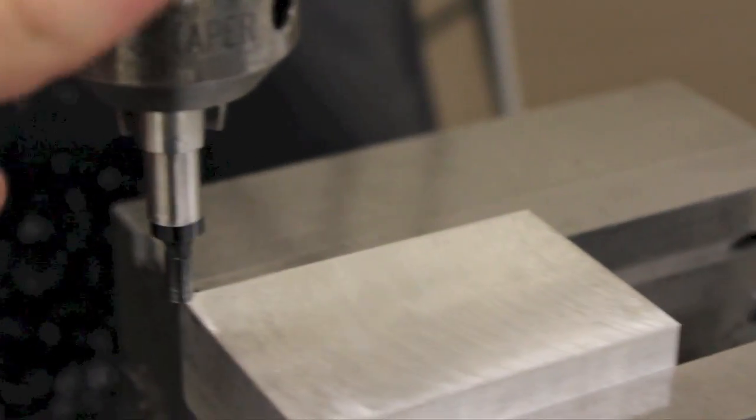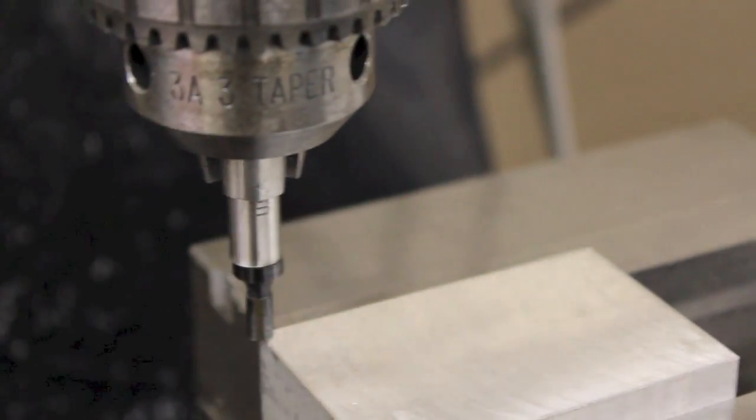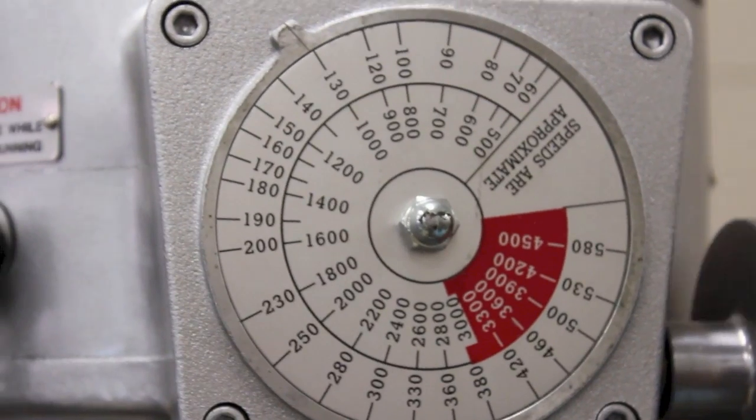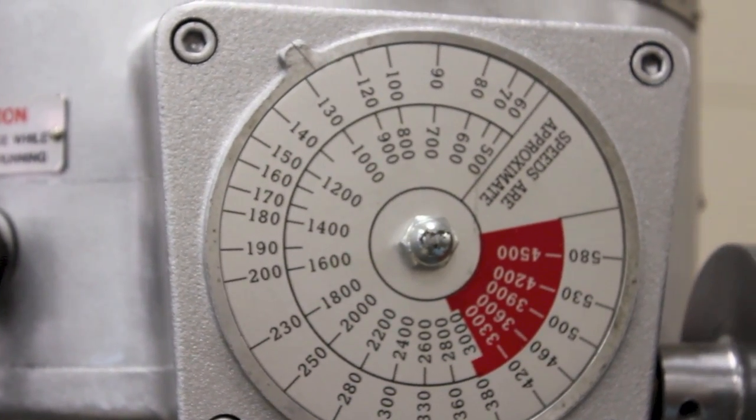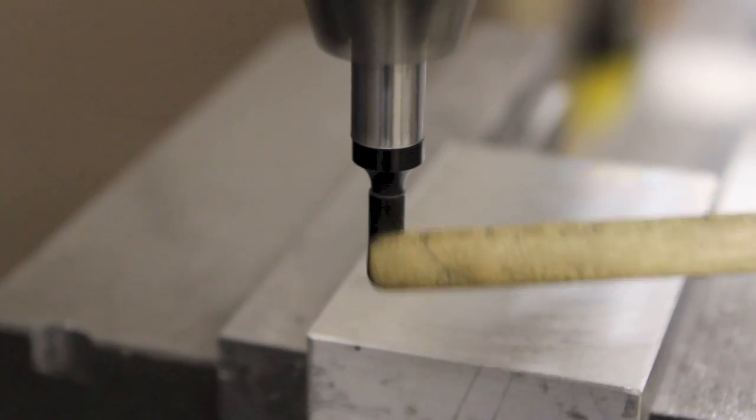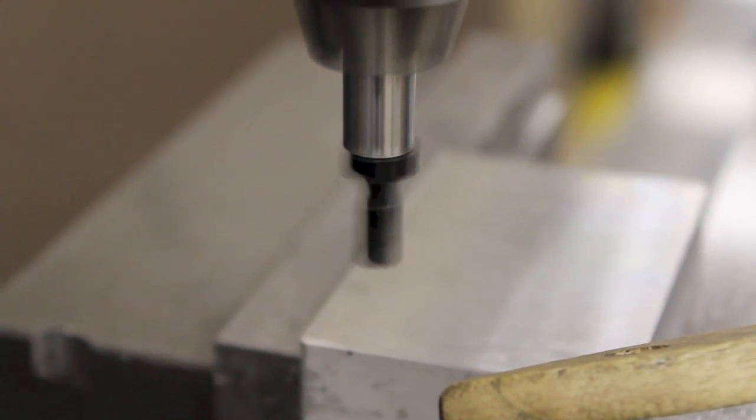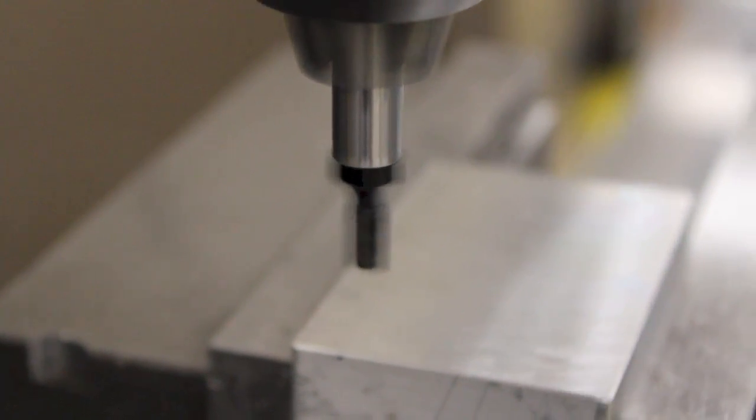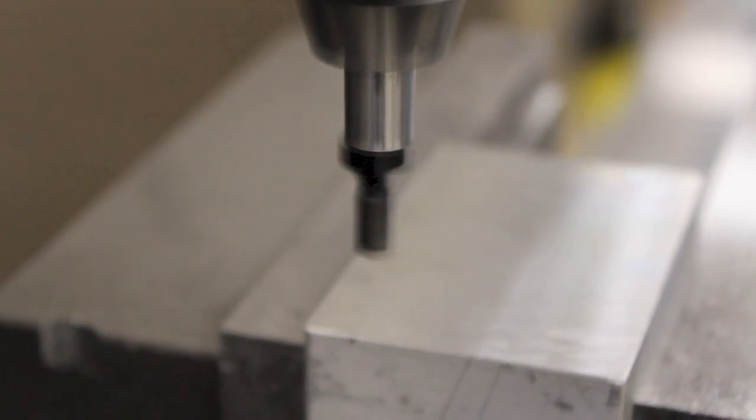Once the tool holder holds the edge finder securely, the tool is put into place and the spindle is engaged. The ideal rpm range for an edge finder is 800 to 1000 rpms. Once the tool is spinning, the operator purposely pushes the cylinder out of round with the shank. This is where the term wobbler originates, which is occasionally used to describe the tool.